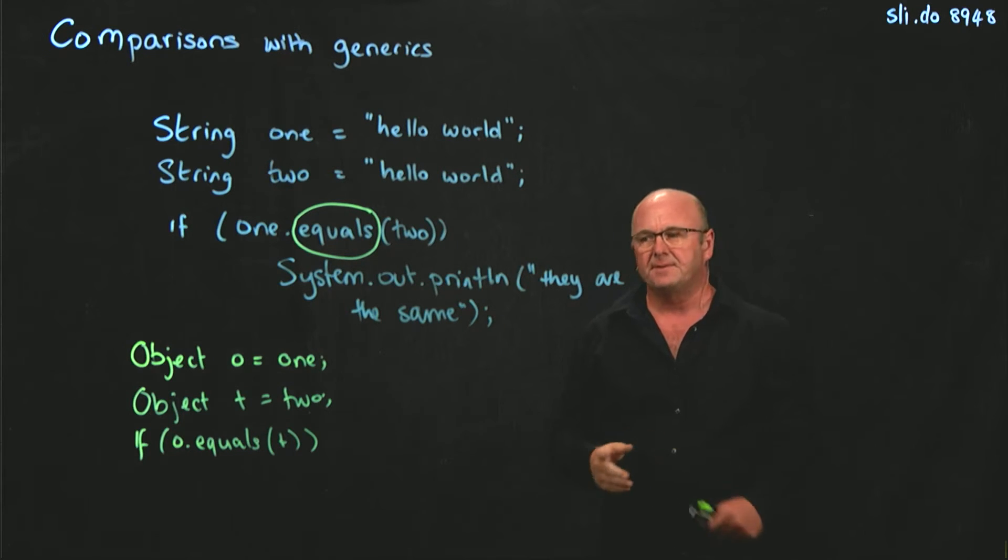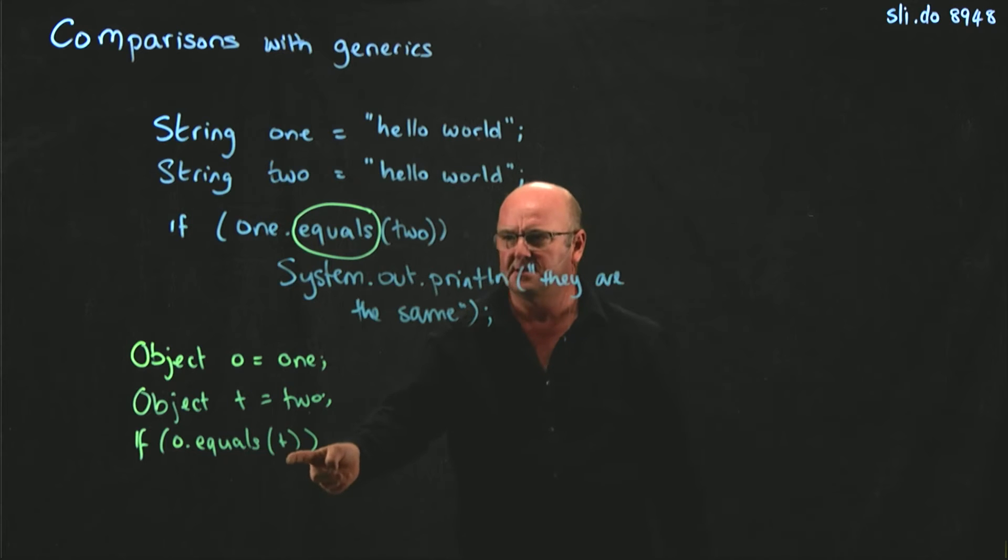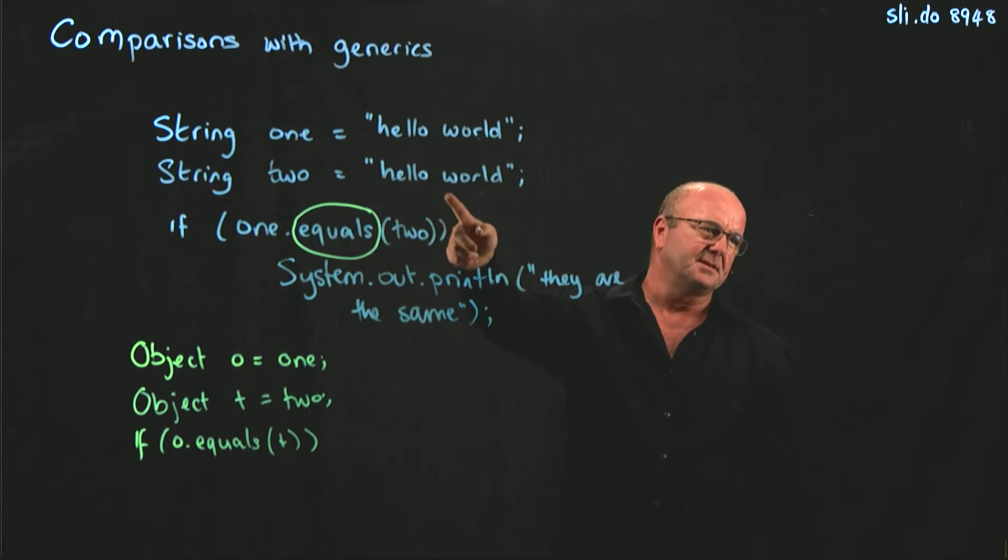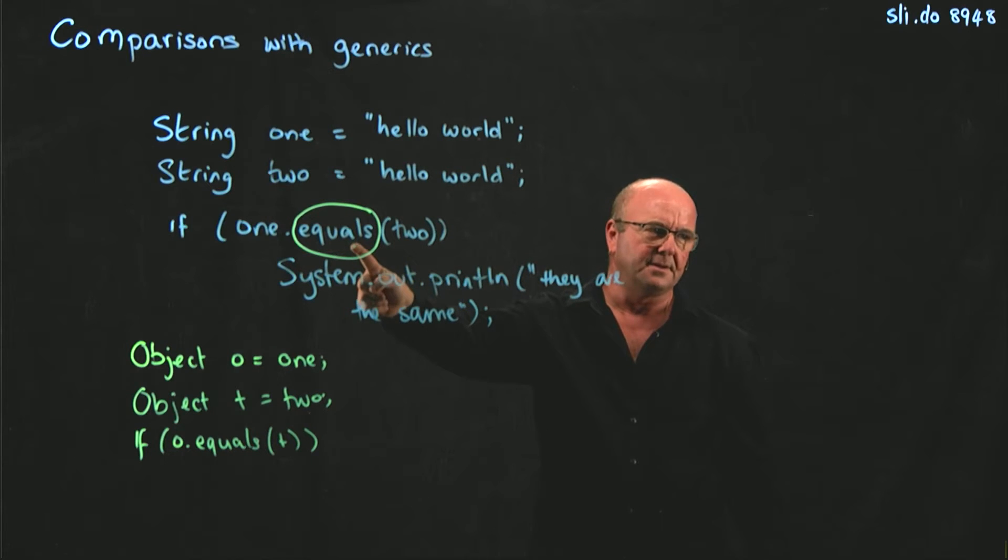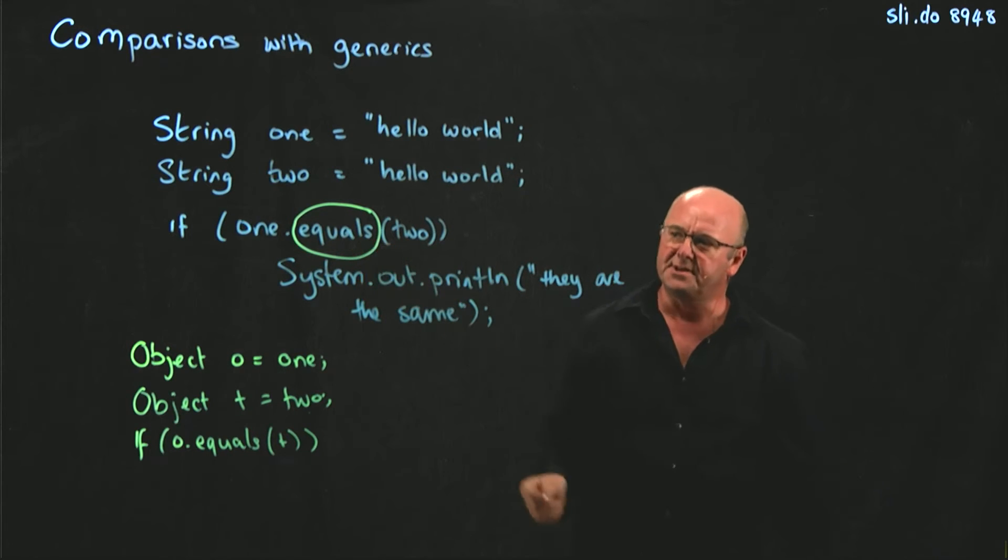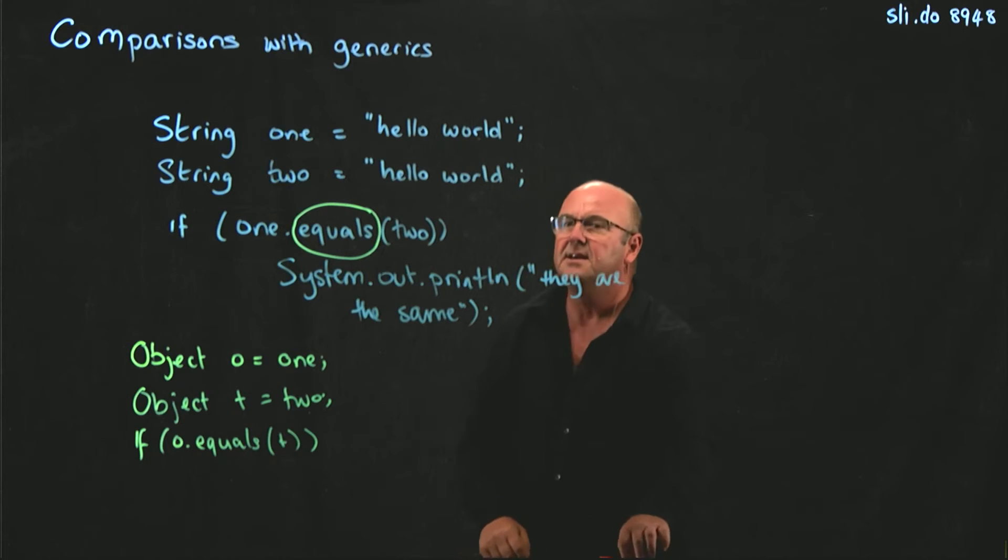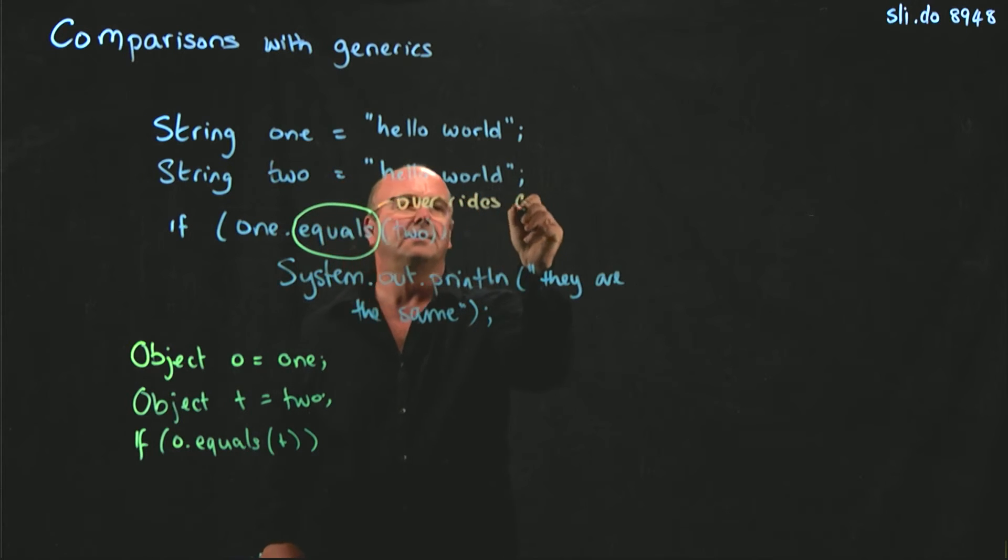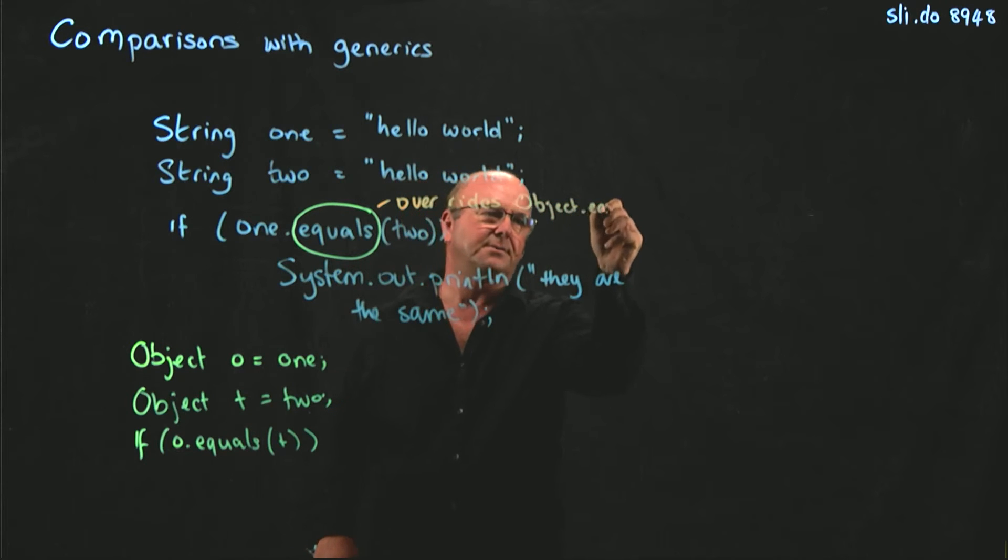So if object is comparing memory addresses and string is not comparing memory addresses, when I say whether two strings are equal, where is this equals method? It's in the string class.